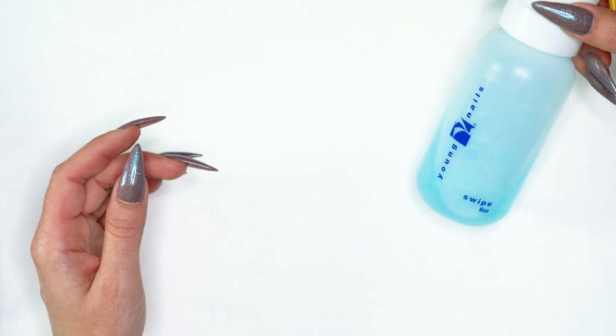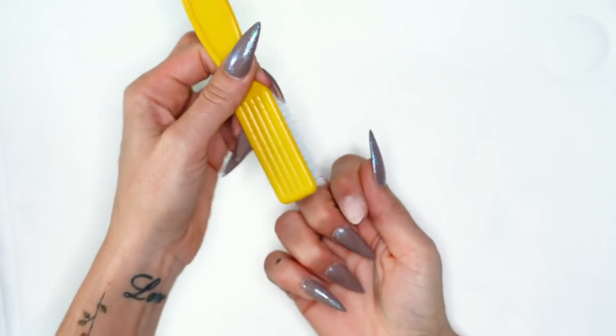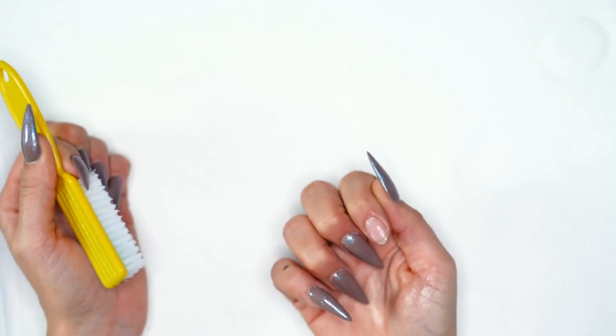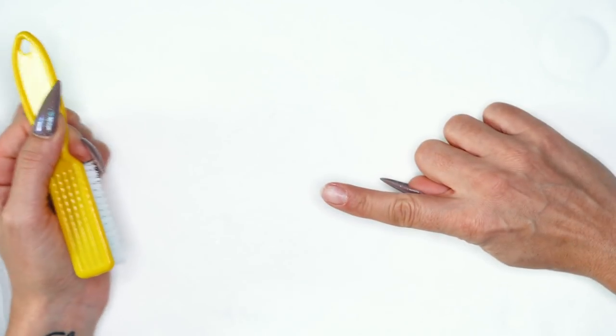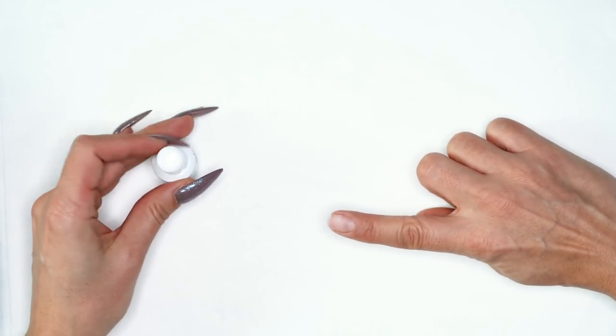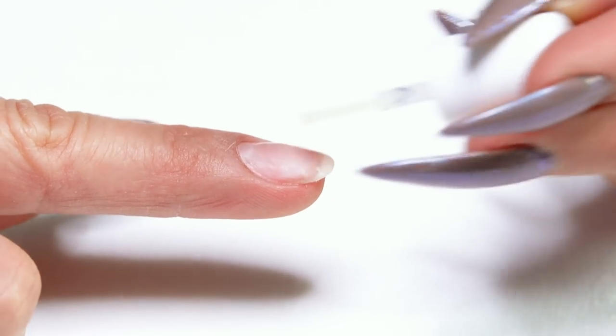I'm going to set that down and grab a clean manicure brush and sweep to get rid of all the dust and debris we just made, making sure the nail is nice and dehydrated and ready for an enhancement. I'm going to grab my protein bond and apply a nice even coat from cuticle to free edge, and then do that one more time.